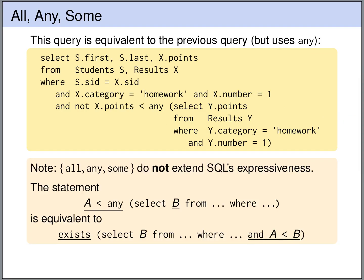In principle we do not need the keywords all, any, or some. They do not extend the expressiveness of SQL. If we have a statement of the form A is smaller than any and then a subquery that selects some attribute B, this statement can always be equivalently formulated using exists with basically the same subquery but an additional condition in the where clause where we say that we only look at those rows where A is smaller than B.